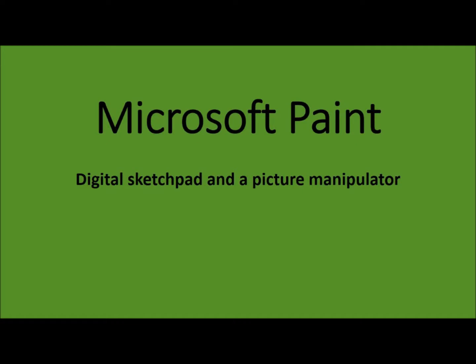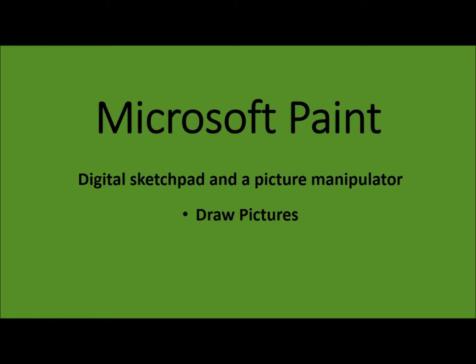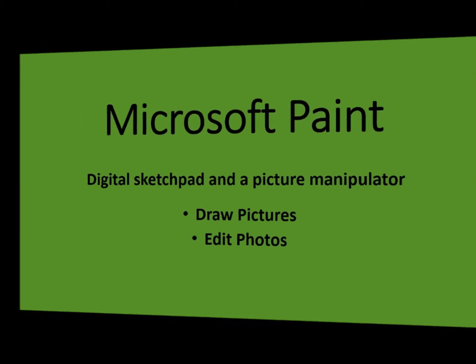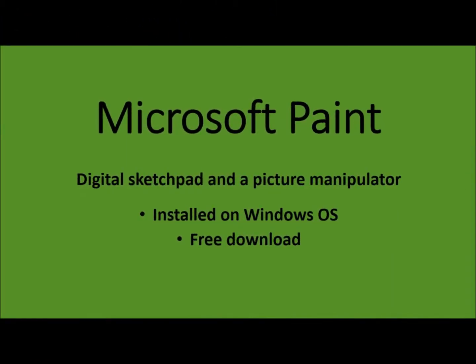Hello and welcome to our tutorial of the Microsoft Paint program. The Microsoft Paint program is a digital sketchbook and a picture manipulator. With it you can draw pictures as well as edit photos. Microsoft Paint comes standard if you have the Windows operating system, or is free for download from the Microsoft website.